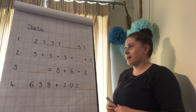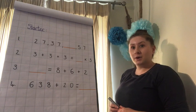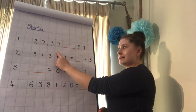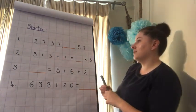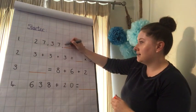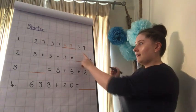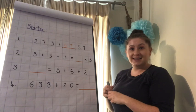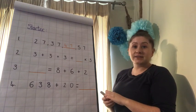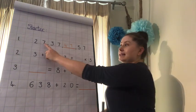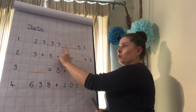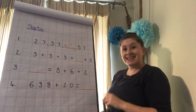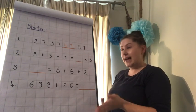You can give yours a tick if you got them right. First one, count with me: 27, 37, 47. Brilliant. 47, 57. Excellent. What's it going up in? That's right, it's going up in tens. We can see the ones digit isn't changing, but the tens is. So it's going up in tens.